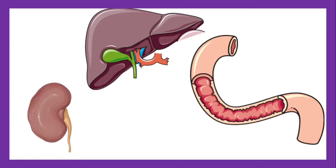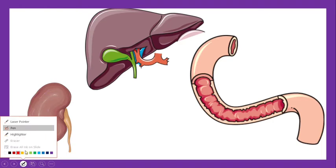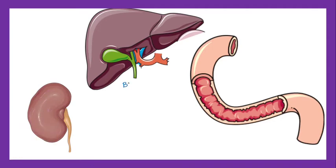For that we have to understand the concept of bilirubin metabolism. When bilirubin gets metabolized in the liver and gets conjugated to form bilirubin monoglucuronide and diglucuronide, these conjugated bilirubins are then secreted into the gut through the biliary system.